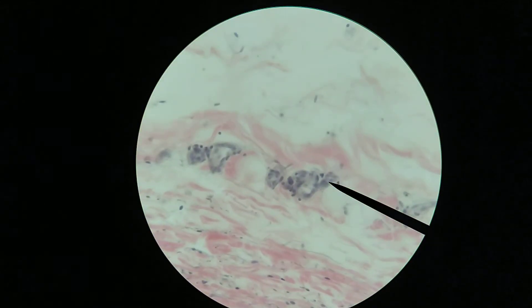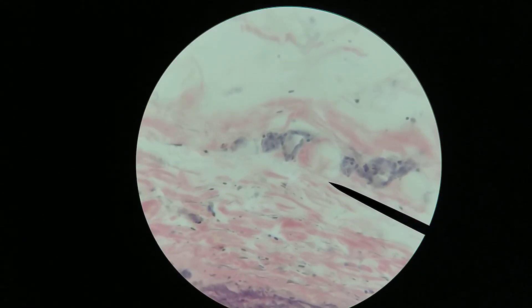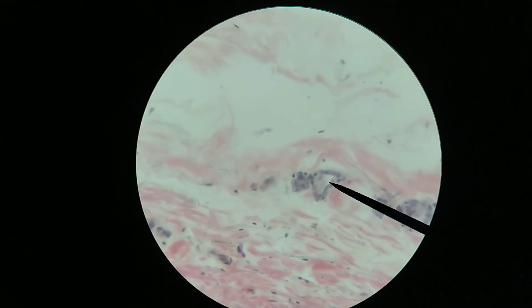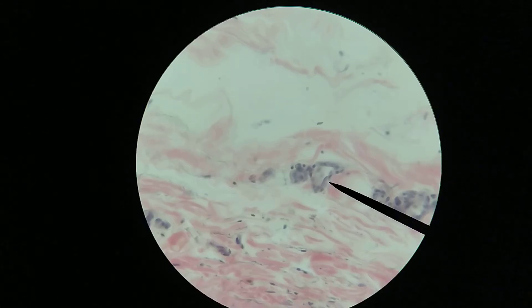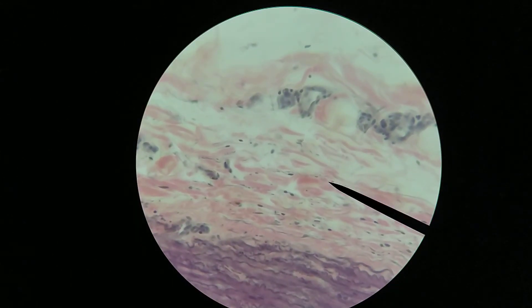Within this region also we see some smaller blood vessels. So this is the vasa vasorum. This is the vessel of a vessel. What you have here are smaller blood vessels that are bringing oxygen and nutrients to the deeper layers of this blood vessel.